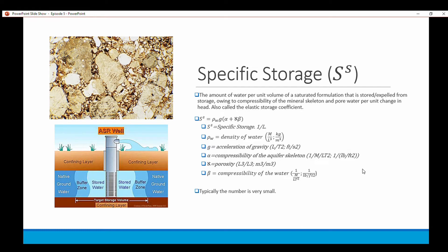Then you have alpha which is the compressibility of the aquifer skeleton, and you have porosity, and then you have beta which equals the compressibility of the water. Typically the specific storage is a very small number.